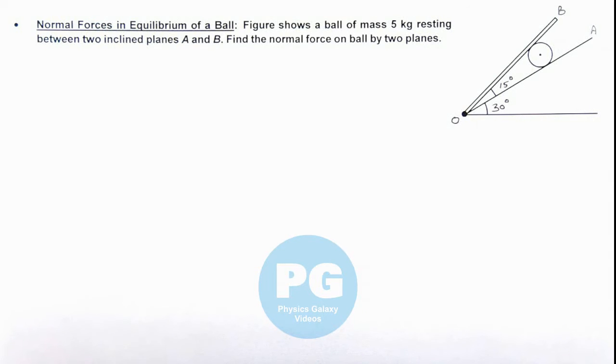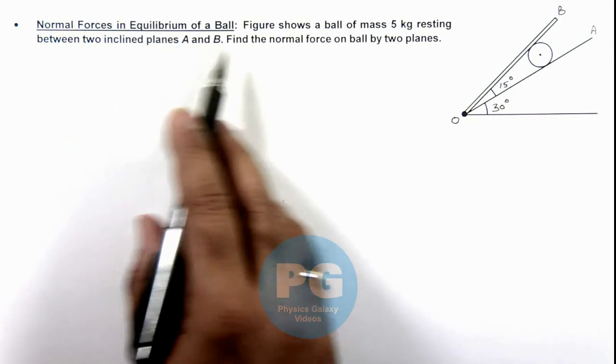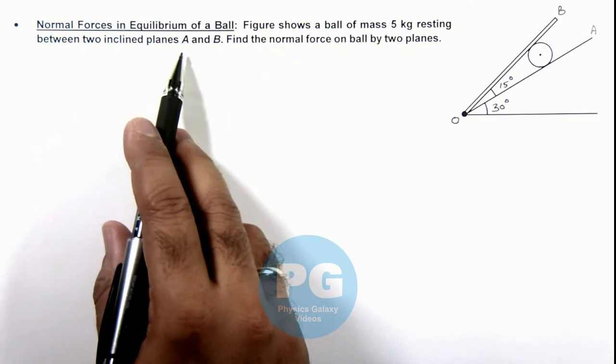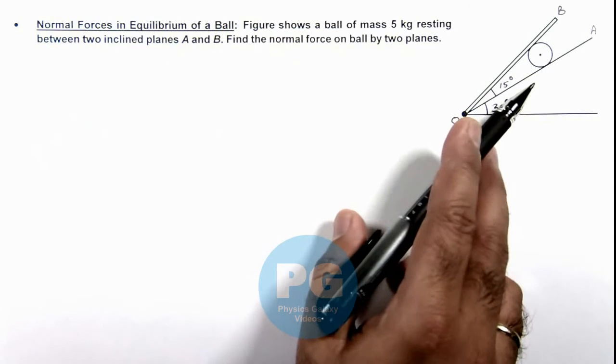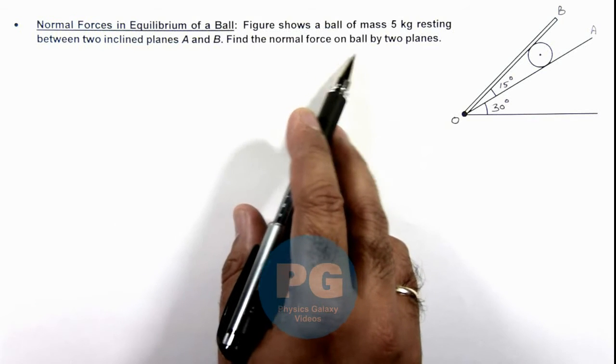In this illustration, we'll study normal forces in equilibrium of a ball. The figure shows a ball of mass 5 kg resting between two inclined planes A and B, as you can see in the figure. We are required to find the normal forces on the ball by the two planes.